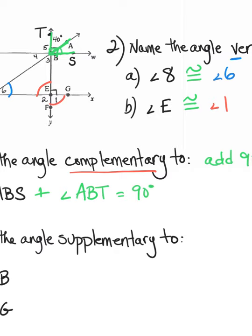For supplementary angles, we need to remember that they add to 180 degrees. If I look at angle WDB — that's this angle here — I need to know what angle will complete the straight line and give me 180 degrees. That angle is going to be angle six. So angle WDB plus angle six gives me 180 degrees.